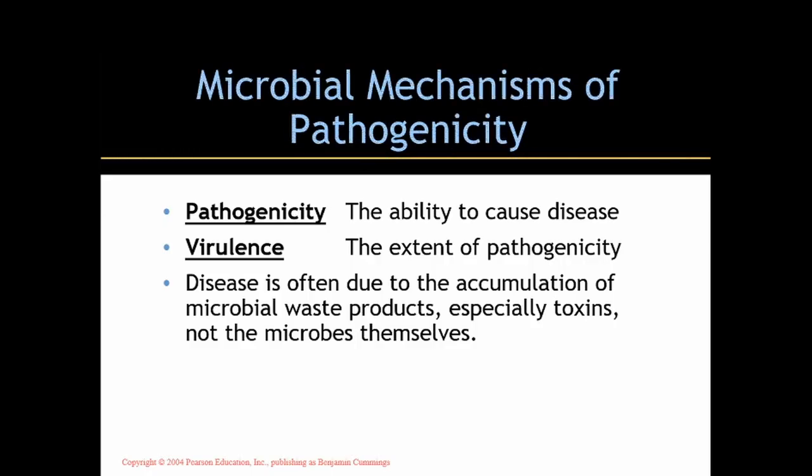A couple of terms. Pathogenicity is the ability to cause disease. We use this term to rank pathogens — to rank those that are parasitizing us. One is more pathogenic than another; one produces a toxin that is more pathogenic than another. So this can be a term used in a comparative sense.